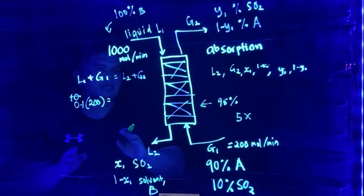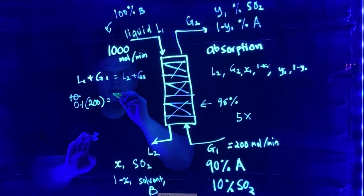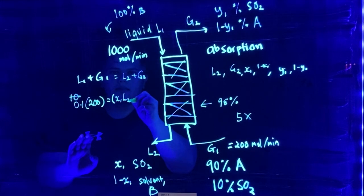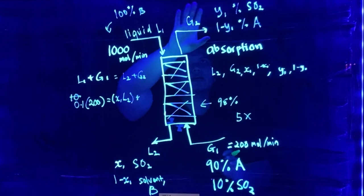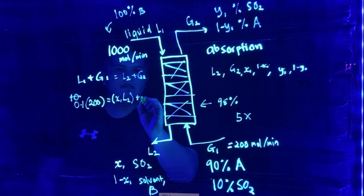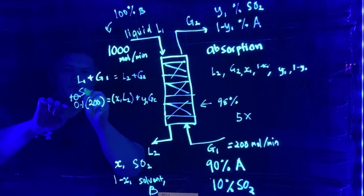So you have X1 L2 plus with the amount that is left together with the gas which is not being absorbed, which is Y1 G2. So this is the mass balance for SO2.